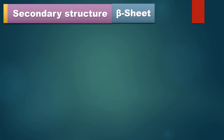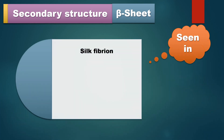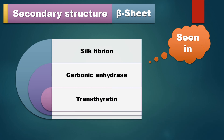Beta pleated sheet is seen in both fibrous proteins and globular proteins. A very good example is silk protein, called fibroin, where we can see many beta sheets — that is why silk is very strong. In humans, we have some enzymes with a majority of beta sheets, like carbonic anhydrase, a very useful enzyme for acid-base balance, and a protein which carries thyroxine in the blood called transthyretin, which also has many beta sheets.